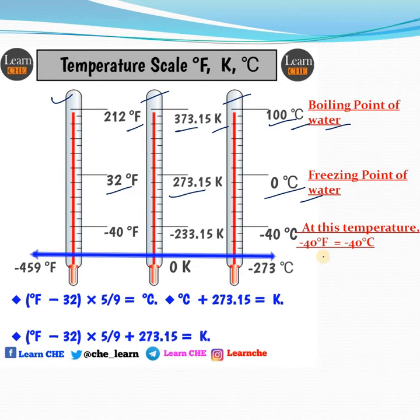Minus 40°F is equal to minus 40°C. Why are 0°C and 100°C the freezing point and boiling point of water? Because it is assumed as a reference.